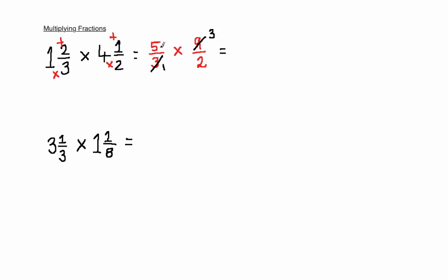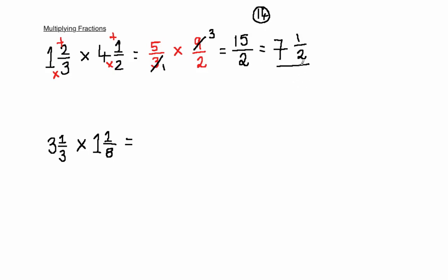Now we simply multiply across: 5 times 3 is 15, over 2 times 1 is 2. Now this is an acceptable answer, however the question will almost always ask you to write it in its lowest and simplest terms. So here we need to change this back into a mixed fraction. You need to ask yourself how many 2's are there in 15 — the answer is 7, and what's left over is 1, so it's 1 over 2. So your final answer here is 7 and a half.